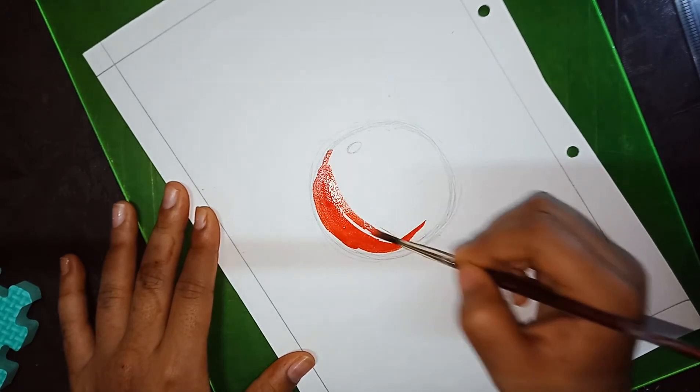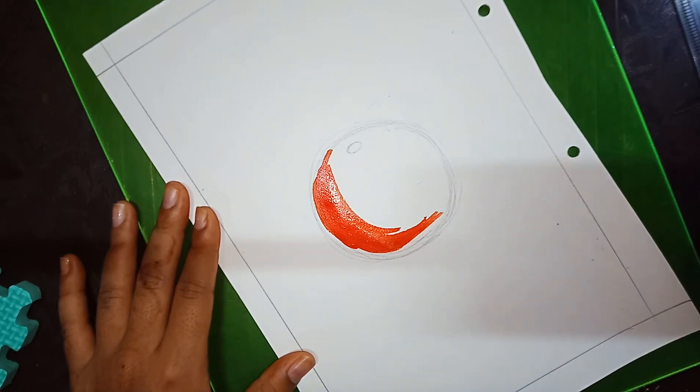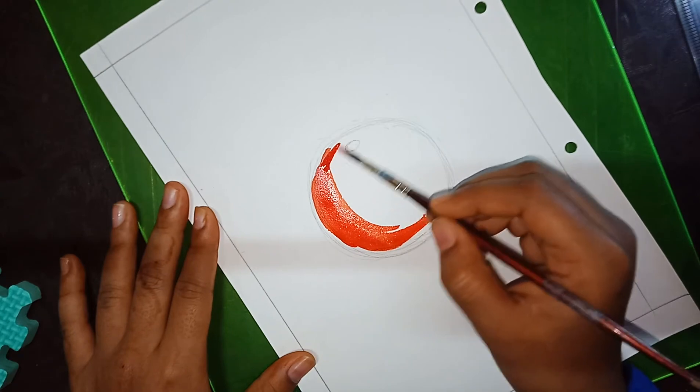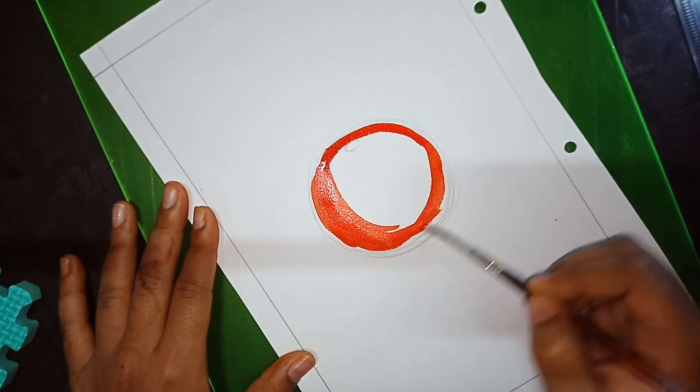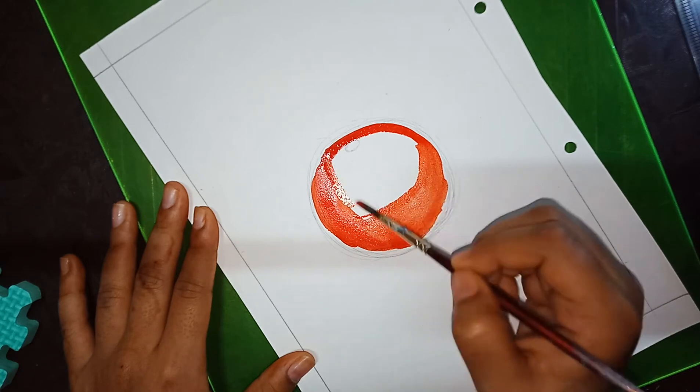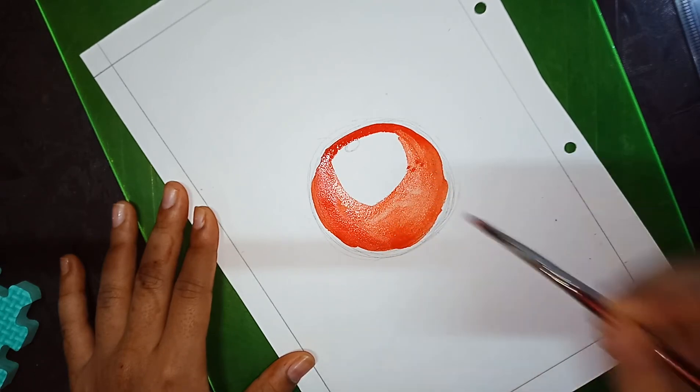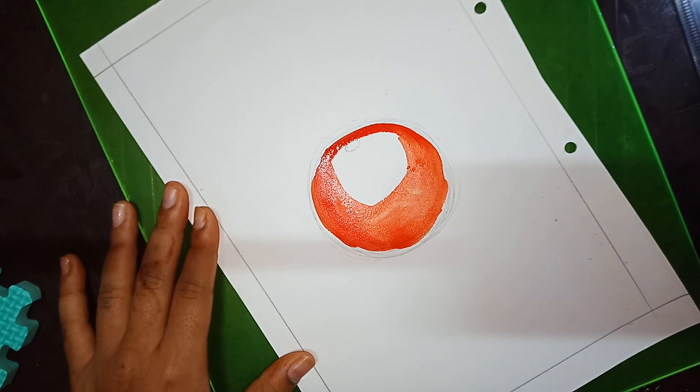Apply evenly at all the edges. We are giving the base of this red and mix of orange and red color. Here I am using cake colors; if you want, you can use poster colors or any other colors.